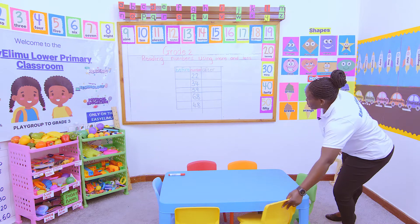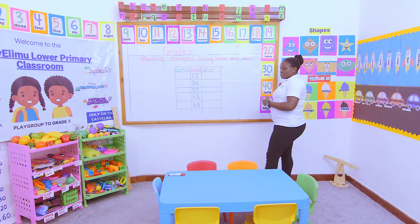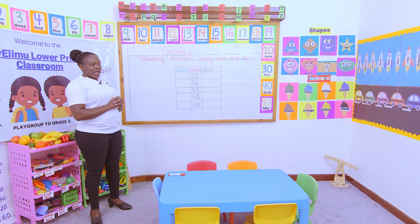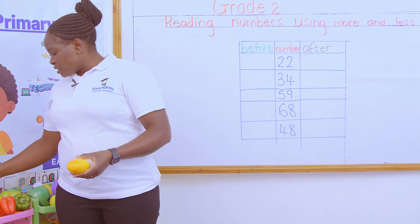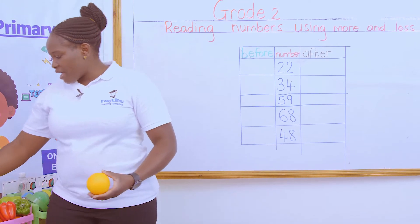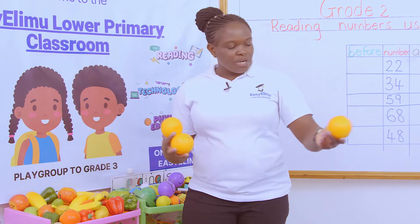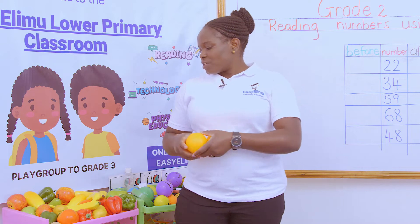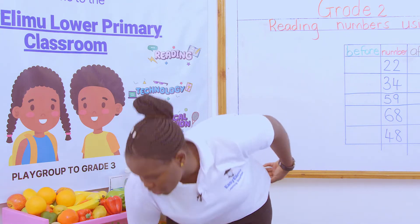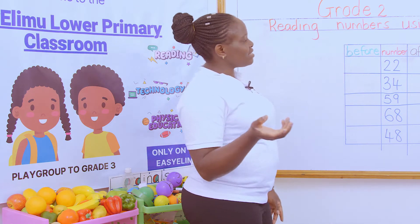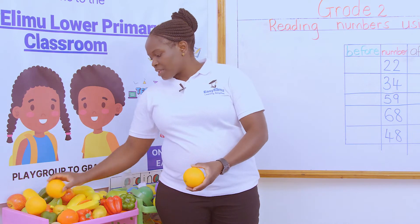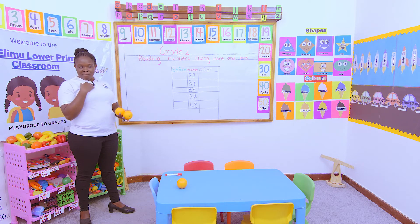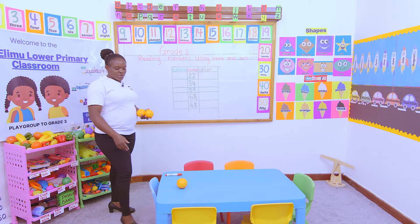Now, look at our board. We are talking about more and less. What does more mean? More means plus something — more means when you add something to what you have. I have more oranges. Why? Because you have one orange and I have two oranges. So, if you only have one and I have two, I had one like you, then I added another one. Which means I have more oranges than you have. So, more means to add something to what you have. What about less? Less is little.